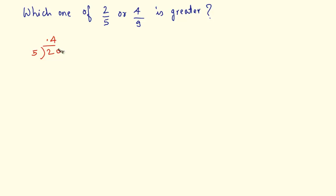5 times 4 is 20 and here is the point. 5 times 4 is 20 and the remainder is 0. So 2 by 5 is equal to 0.4.